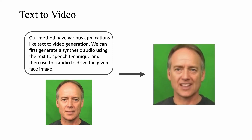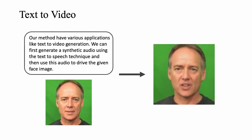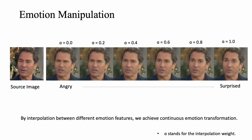Our method has various applications like text-to-video generation. We can first generate a synthetic audio using the text-to-speech technique and then use this audio to drive the given face image. Our work is also able to manipulate the emotion. By representing emotion in the source video as a high-dimensional feature, we construct a continuous emotion-laden space where features of the same type are clustered. Thus, we can manipulate the emotion by interpolating between the features from different emotion categories.